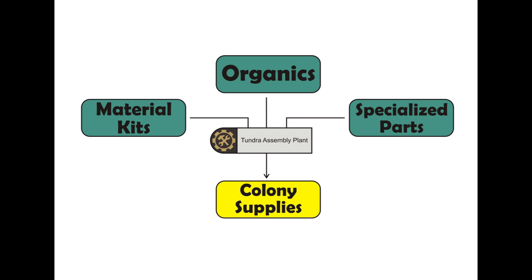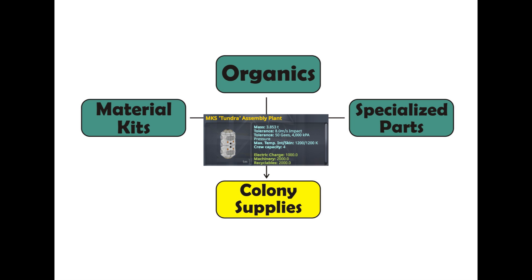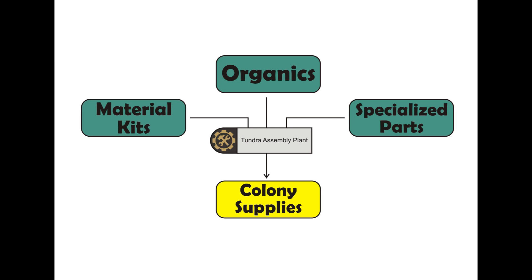The second high-end good that will ensure your colony is fully sustainable is colony supplies. To produce colony supplies you will need the same components as for machinery — material kits and specialized parts — but you will also need organics. If you have all three, you can combine them in the Tundra Assembly Plant to make colony supplies. Once you have colony supplies and machinery, your colony becomes fully self-sufficient. Your equipment will never break, and thanks to colony supplies you can make the life of your Kerbals so bearable they will never want to return home.